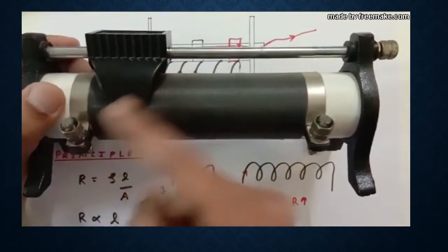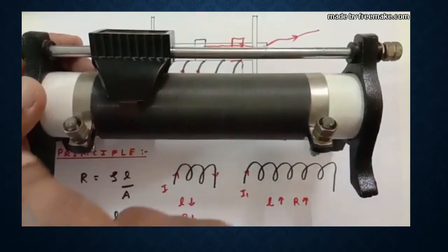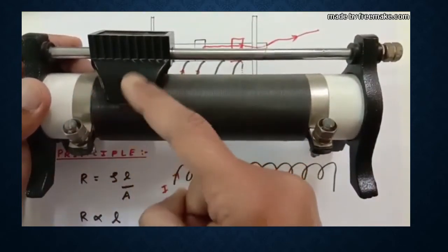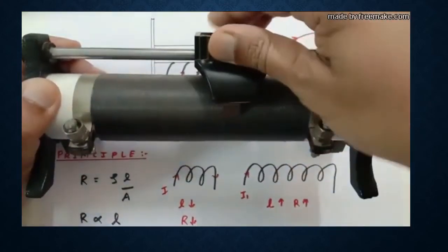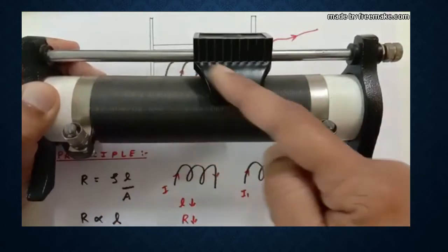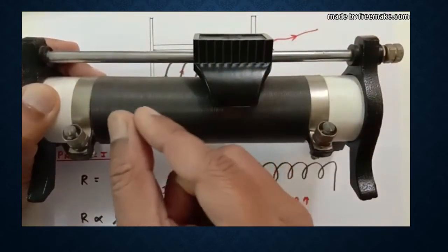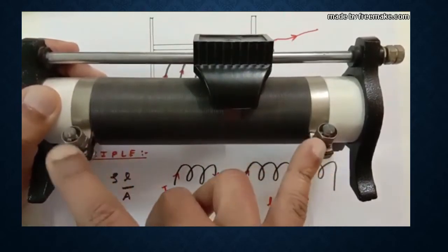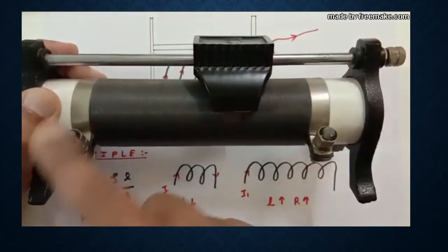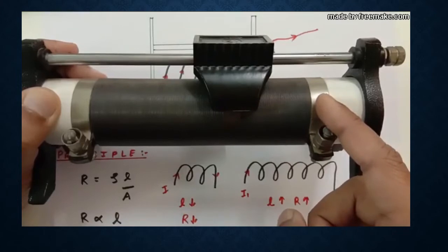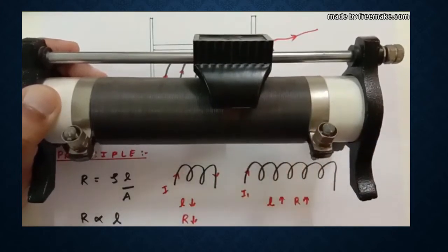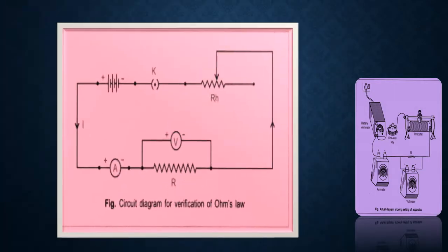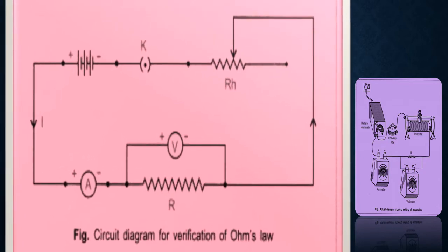If you use the sliding terminal, the current enters, flows through fewer turns and exits — giving lower resistance. Moving the slider increases the number of turns the current passes through, increasing length and resistance. Using only the two fixed terminals forces current through all the turns, making it a fixed resistor. Now let us have a closer look at the circuit diagram for the verification of Ohm's Law, along with its diagrammatic representation.